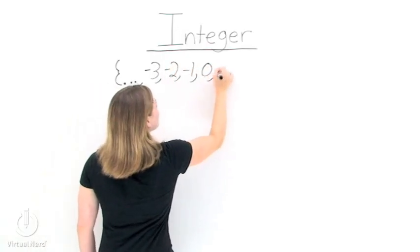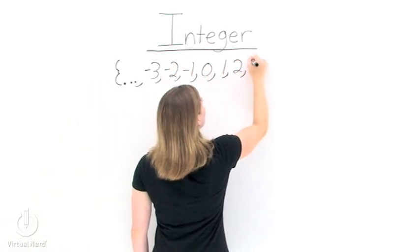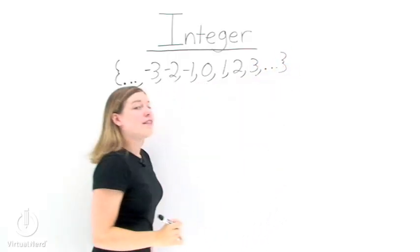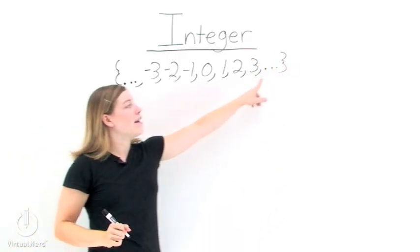Here's what the set of integers looks like. Notice that there's three dots on each end of the set. This means that the set goes from negative infinity to positive infinity.